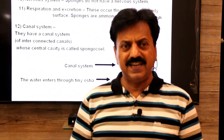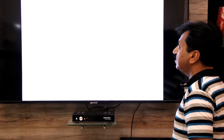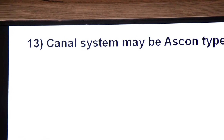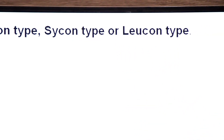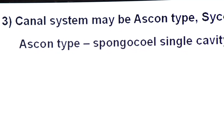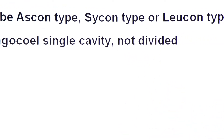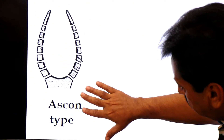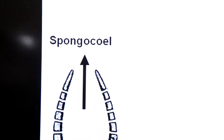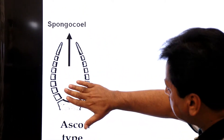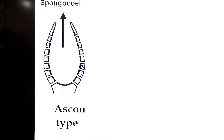There are three types of canal system. In the ascon type, the spongocoel is a single cavity, not divided — the simplest type of canal system. In the sycon type, the spongocoel is divided into secondary chambers.